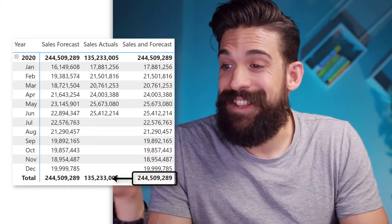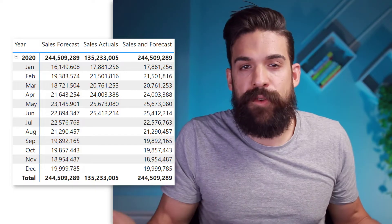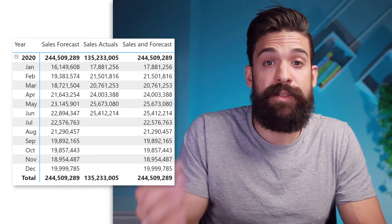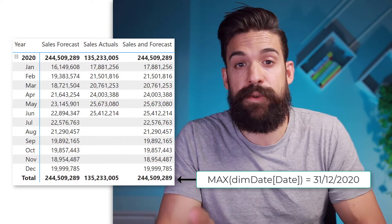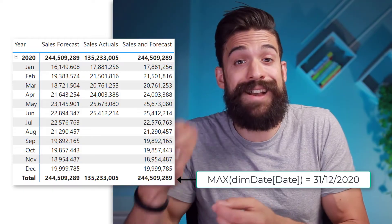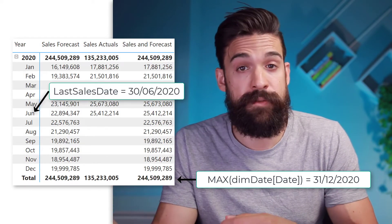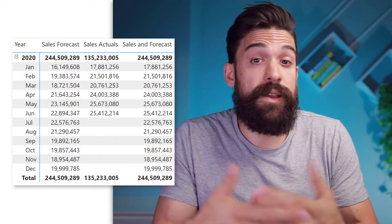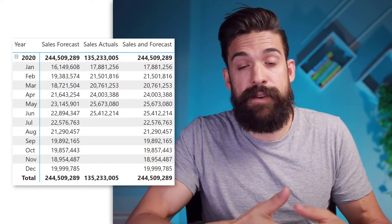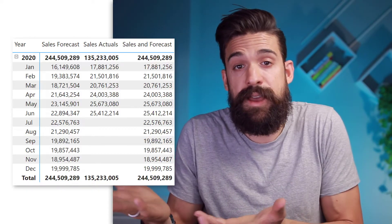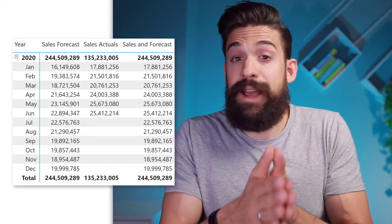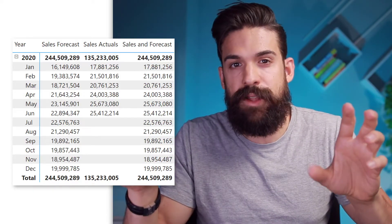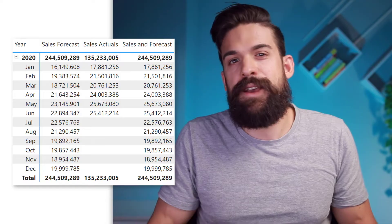However, the total looks a little bit strange because it is exactly the same as the sales forecast, and I was expecting a combination of actuals and forecasts. Why is this? Because the last date in the filter context there is the 31st of December 2020, and that is after the last sales date of 30th of June — so it returns just the sum of the forecasted values. It could also have a problem in June if you don't have actuals for the full month. If you only have data until the mid of June, then the last date is after the last transaction date, and for the full month it would show the forecast, not the combination. So this formula as we have it now is not perfect — let's make it better.